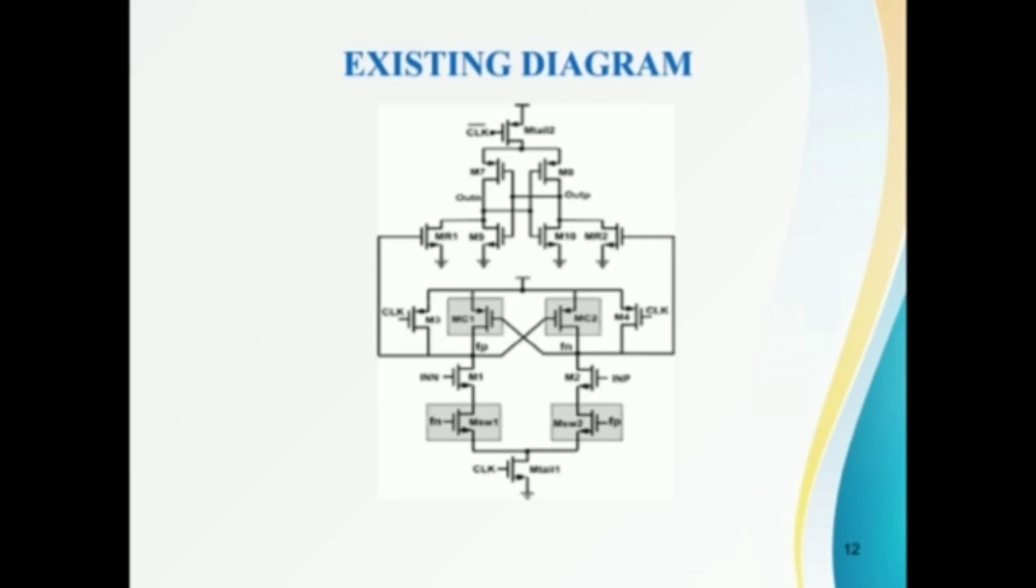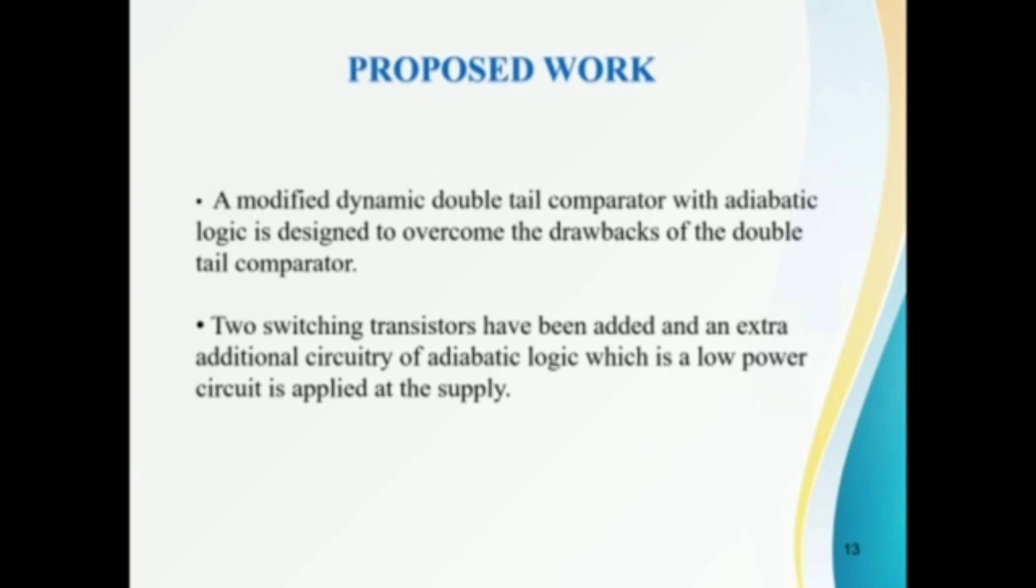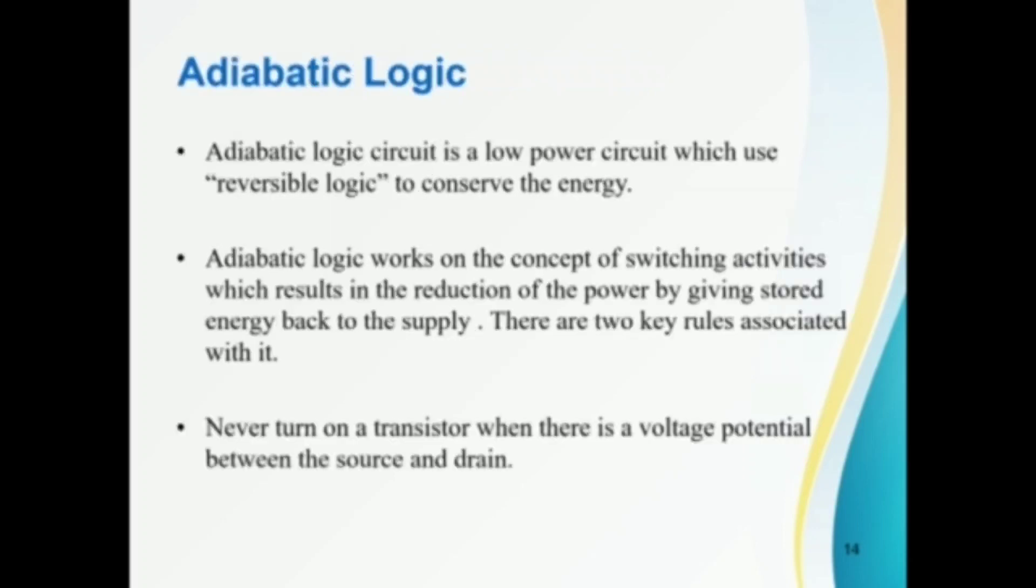This is the existing diagram. And this is the proposed work. A modified dynamic double tail comparator with adiabatic logic is designed to overcome the drawbacks of a double tail comparator. Two switching transistors have been added and an extra additional circuitry of adiabatic logic which is a low power circuit is applied to the supply.